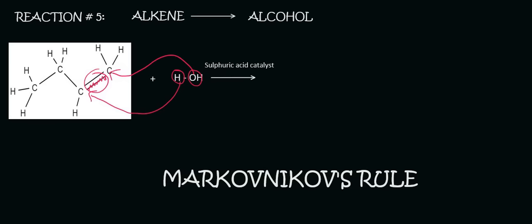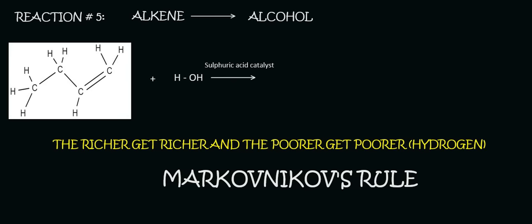The way it works is the following. All I want you to remember is the following riddle. The richer get richer and the poorer get poorer. And I've put in brackets hydrogen because that's what we're talking about. So you've got to look at these two carbons and ask yourself which one is the richest in hydrogen. Which one has the most hydrogens? Well that's this one. And so the analogy or the riddle says that the richer will get even richer. That means that this hydrogen is going to go attach over there and then obviously the OH will attach over there. And so our product is the following.